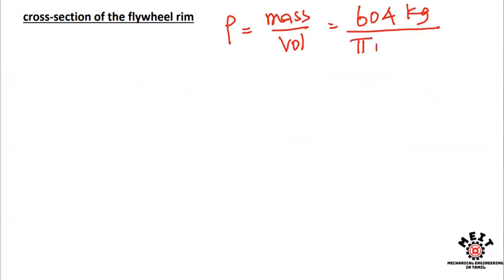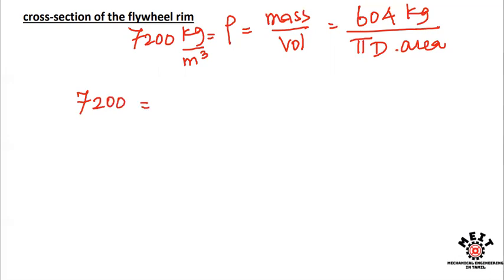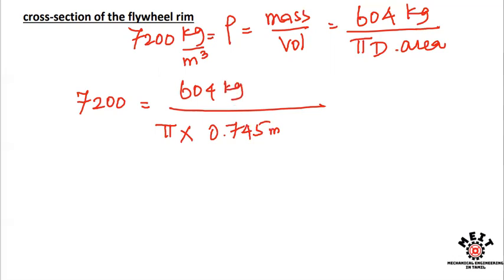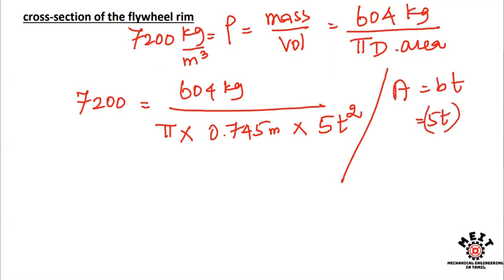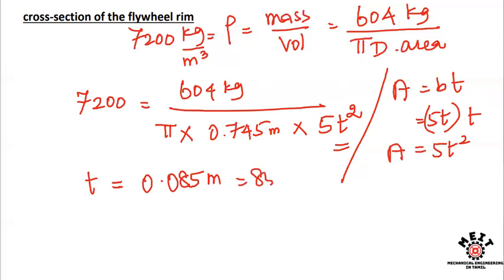Using the density relation: density equals mass divided by volume, and volume equals π×D×area equals π×D×5t². Substituting density equals 7200 kg/m³, mass equals 604 kg, and diameter D equals 0.745 m, then solving for t gives t equal to 0.085 meters, which is 85 millimeters.